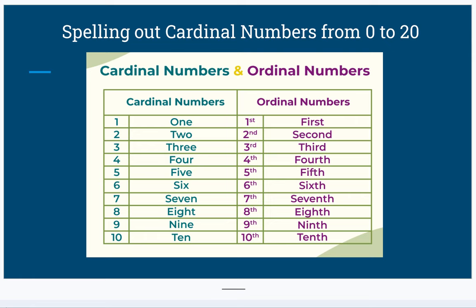Spelling out cardinal numbers from 0 to 20. In this image, we have cardinal numbers and ordinal numbers. For example, cardinal numbers: 1, 2, 3, 4, 5, 6, 7, 8, 9, and 10.